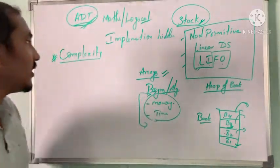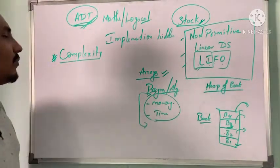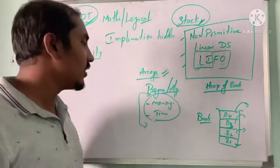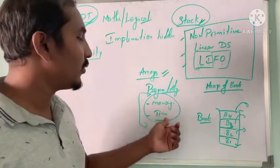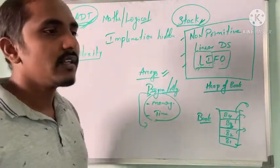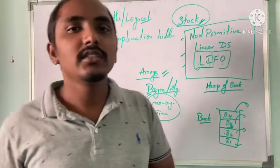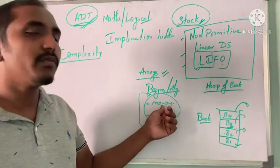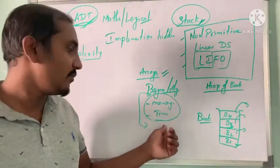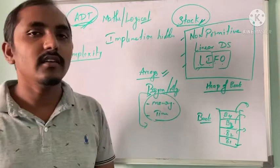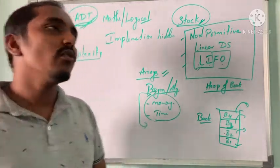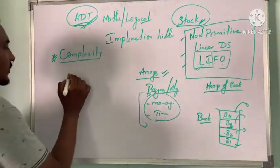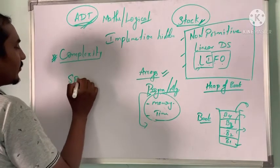In general, complexity is the measure of the time and space required for an algorithm's execution. When considering complexity, it considers both memory as well as time. Dividing the types of complexity, we get memory-based and time-based complexity. There is also one more concept called space and time trade-off.